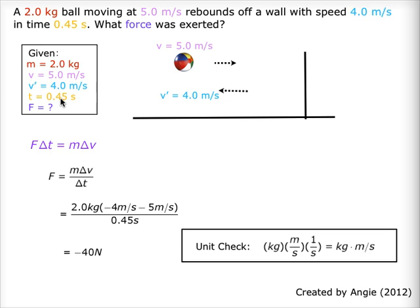The equation is chosen which fits the information given, shown in purple — the two equations combined in the unit of momentum. Values are substituted and the equation is solved. Make sure you round to the correct sig figs and double check the units.